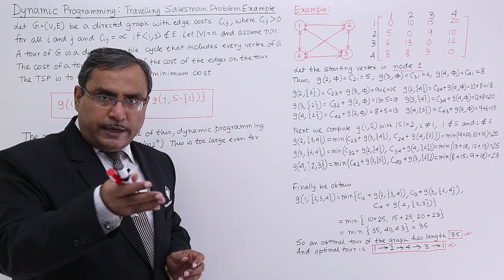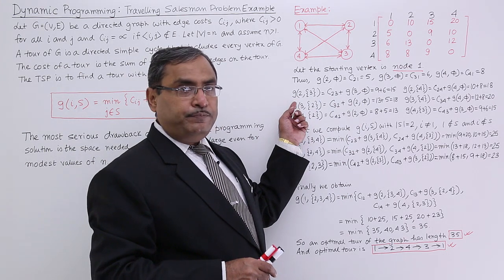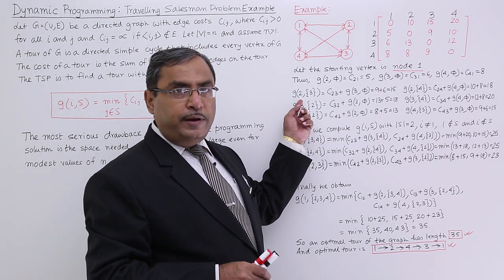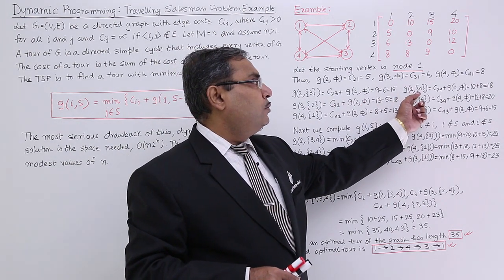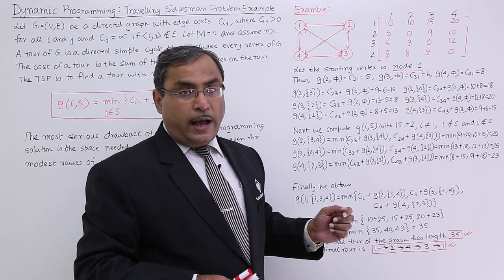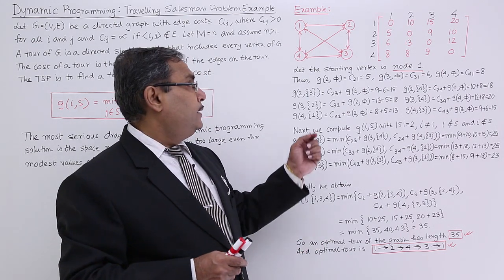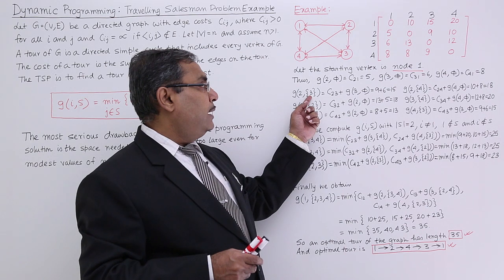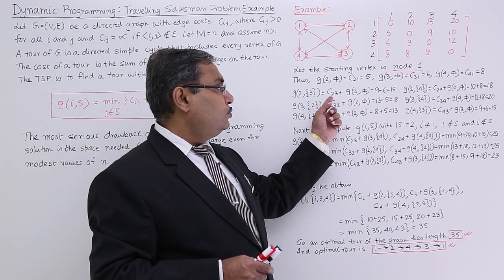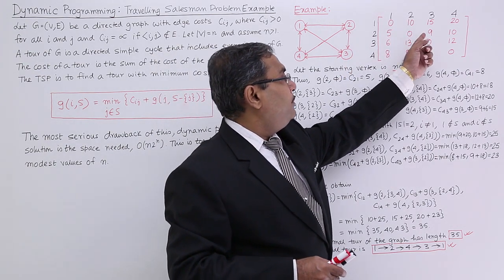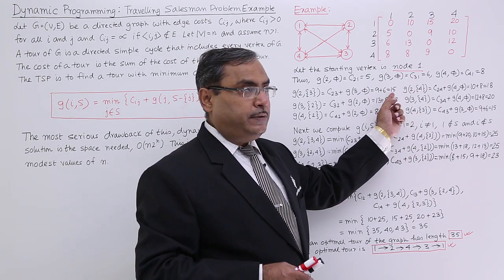Please come to the prior recursive call. Let us suppose I am at node number 2 and remaining node is 3. I can be at node number 2 and the remaining node can be 4. I cannot be at node number 2 and the remaining node will be 1 because I am starting from node number 1. So, C23 plus G(3,φ). C23 means 9 and G(3,φ) I can get it from here and that is 6. So that is 15.